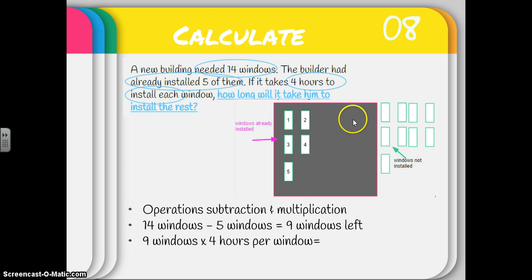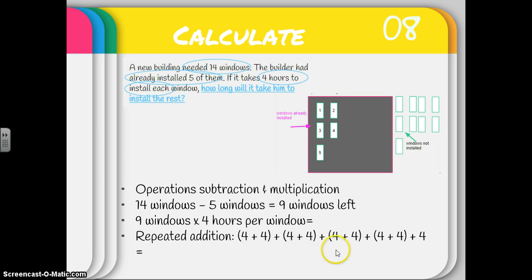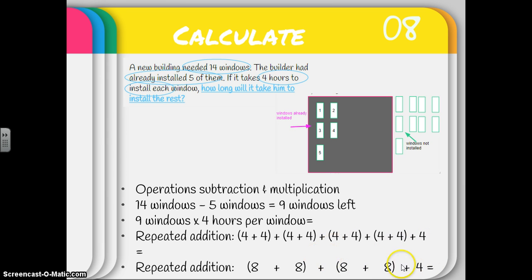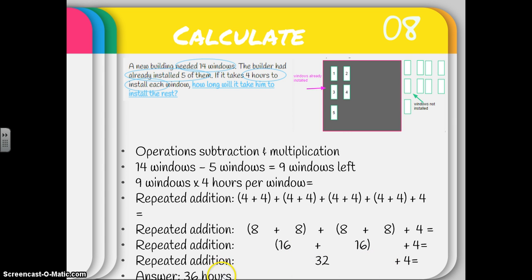Nine windows left — it's going to take four hours for each window. So nine windows times four hours per window. And this is where I'm going to do some repeated addition to help me. So I have four plus four plus four plus four plus four plus four plus four plus four plus four. I really want to show all of my work since I'm still learning my multiplication facts. So I go through and group them together using the associative property of addition. Now I have eight plus eight plus eight plus eight plus eight, and I still have that extra four left over. Grouping them together again, now I have 16 plus 16 and my four that was left over.